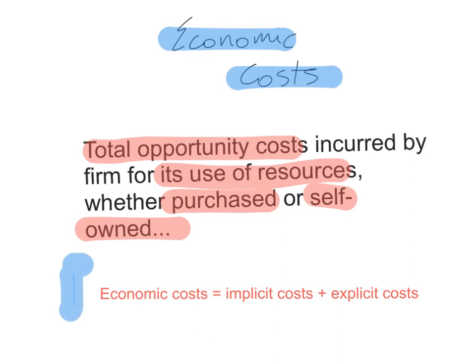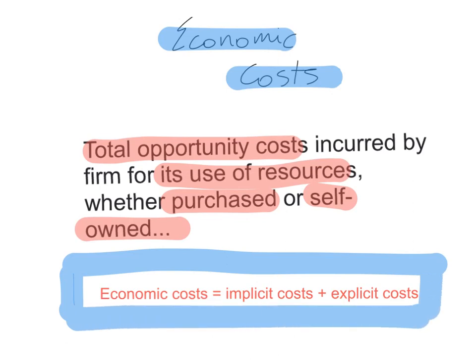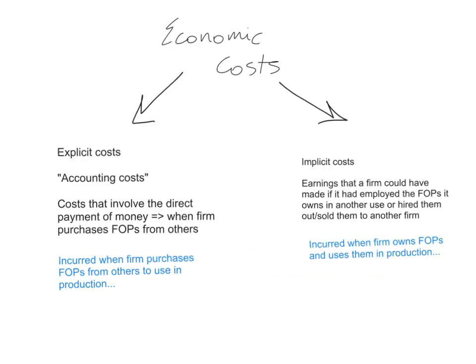Economic costs equal explicit costs plus implicit costs. Let's clarify the difference between implicit and explicit costs. Economic costs are the sum of the explicit costs and the implicit costs. I'll start by explaining the explicit costs.